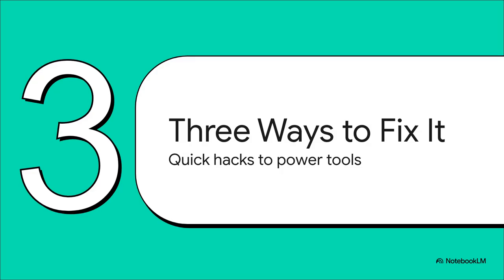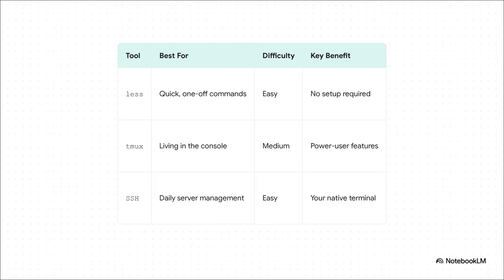That's the bad news. The good news? You are not stuck. There are excellent — and frankly much better — ways to get this functionality back. There are three different ways you can solve this, ranging from a quick little hack to a complete workflow upgrade. We've got three main options: piping our command output to a tool called less, using a terminal multiplexer like tmux, or just doing what the pros do and connecting with SSH. Each one has its own sweet spot.